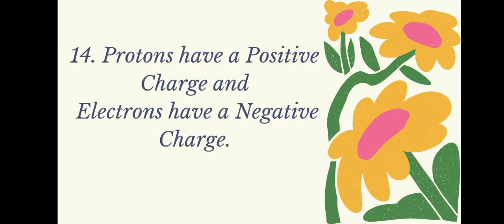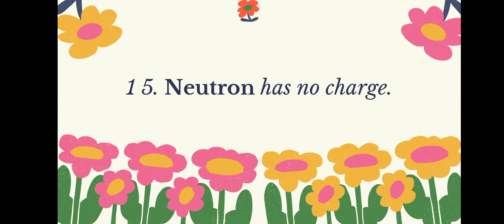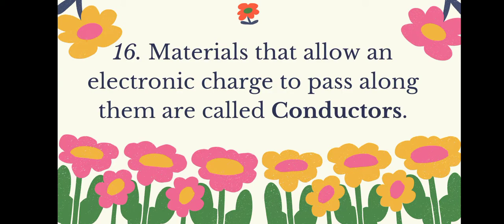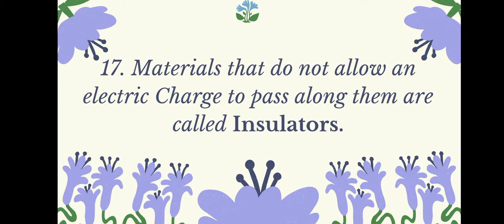Protons have a positive charge and electrons have a negative charge. Neutrons have no charge. Materials that allow an electric charge to pass along them are called conductors. Materials that do not allow an electric charge to pass along them are called insulators.